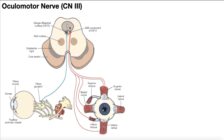In the previous videos when we talked about cranial nerves 1 and 2, olfactory and optic, those are the only two cranial nerves that do not in any way involve the brainstem. But when we start talking about cranial nerves 3 through 12, these involve the brainstem to some extent.